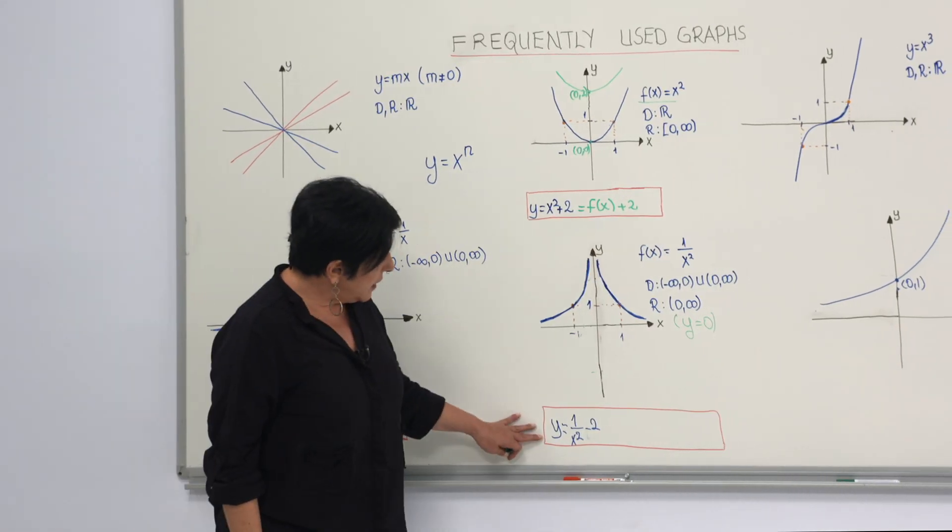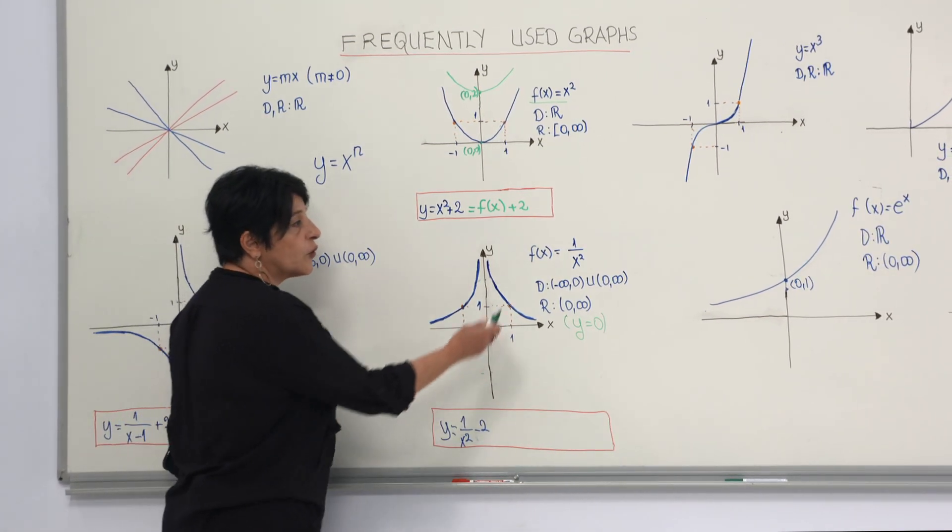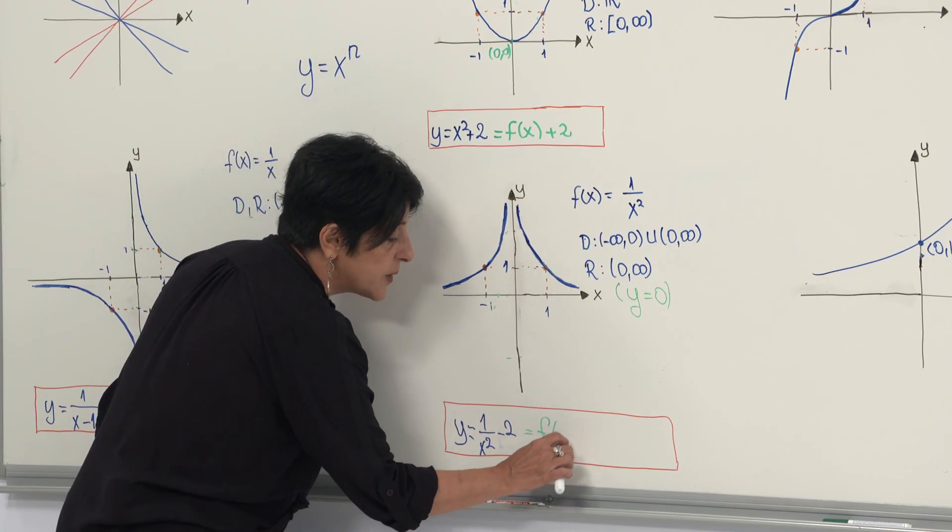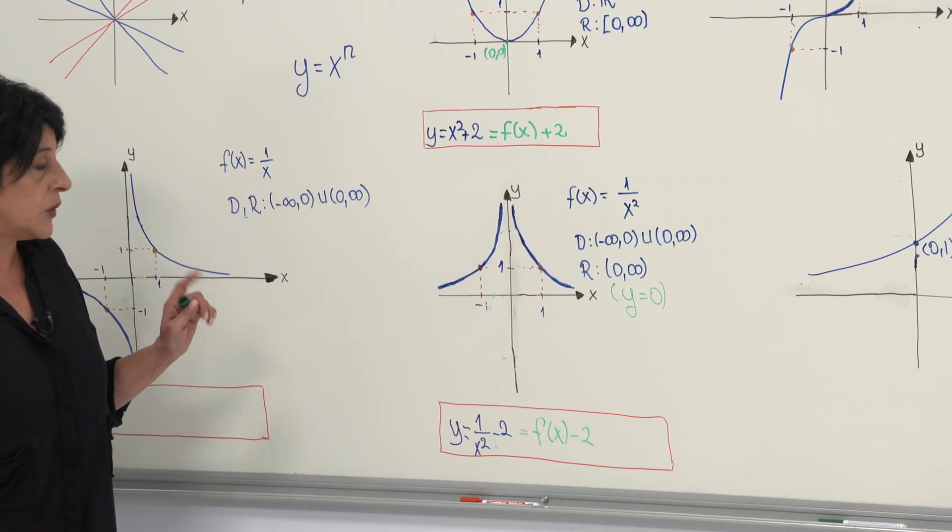And then we can look at this example: y equals 1 over x squared minus 2. And if you call f(x) to be 1 over x squared, then you can express it as f(x) minus 2, which means you need to shift it down two units.